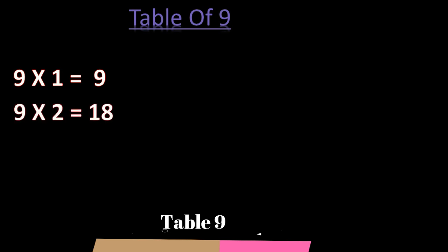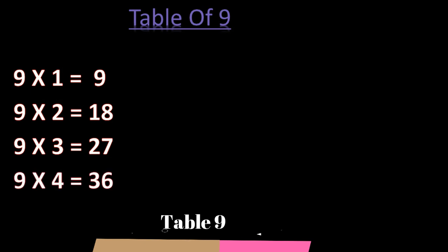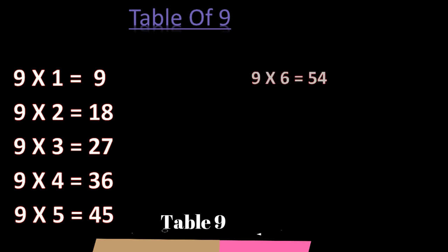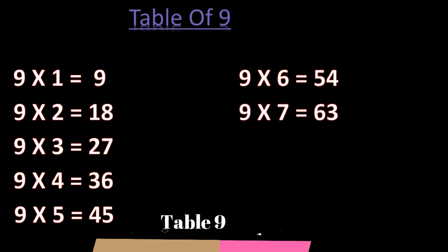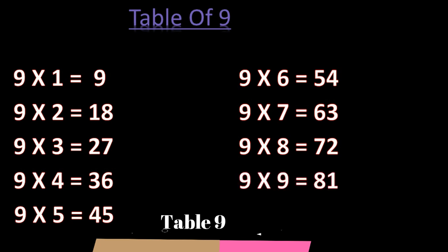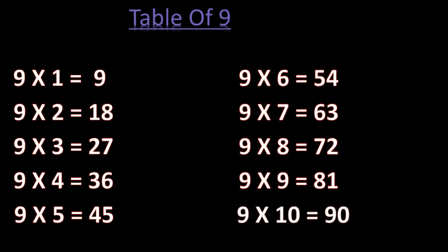Table of 9. 9 ones are 9. 9 twos are 18. 9 threes are 27. 9 fours are 36. 9 fives are 45. 9 sixes are 54. 9 sevens are 63. 9 eights are 72. 9 nines are 81. 9 tens are 90. Last table.